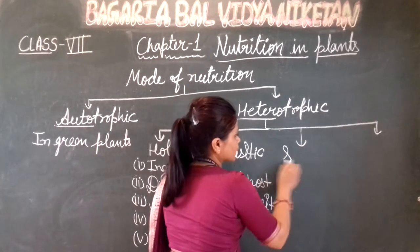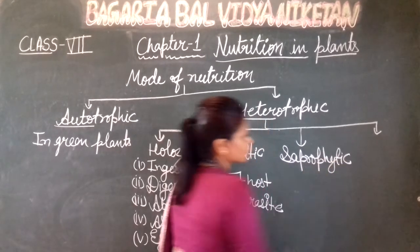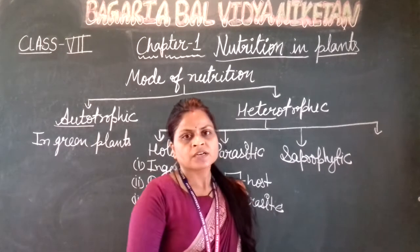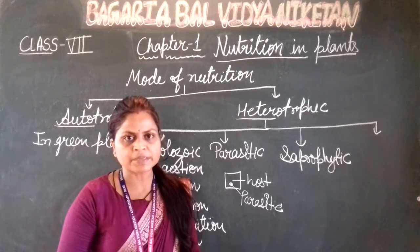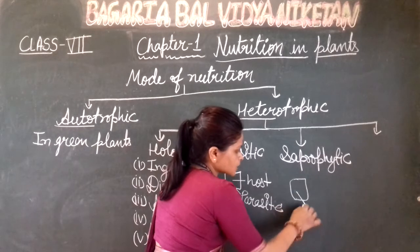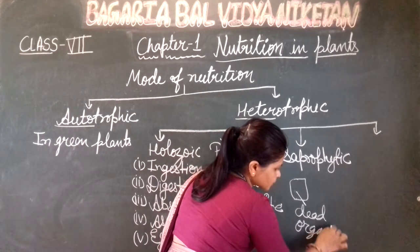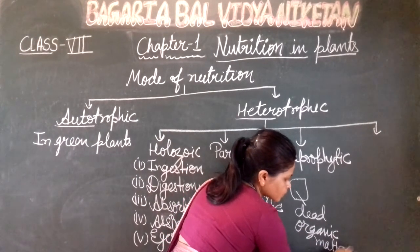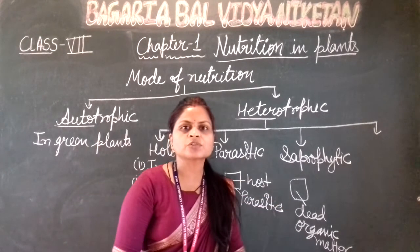The next one is saprophytic mode of nutrition. In this mode of nutrition, one animal or living being is dependent on dead organic matter — dead animals or plants — for their food. यह हम बोल सकते हैं कि कोई भी animal जो मर गया है, उसकी dead body पर जो other animals होते हैं, वो depend होते हैं अपने food के लिए।